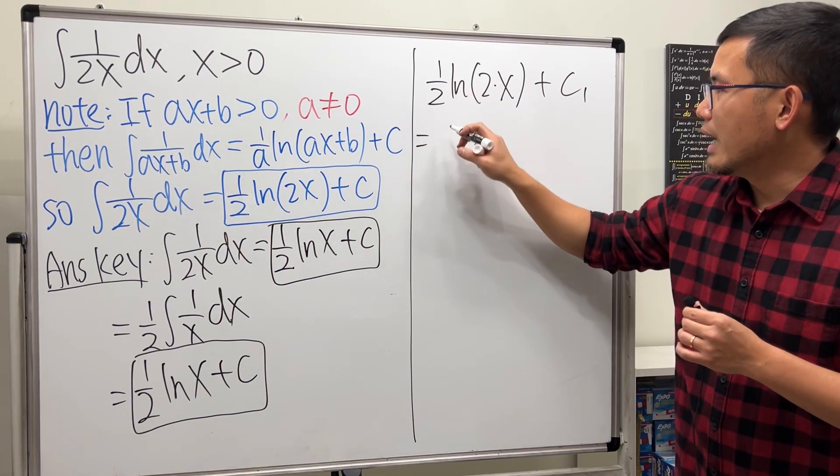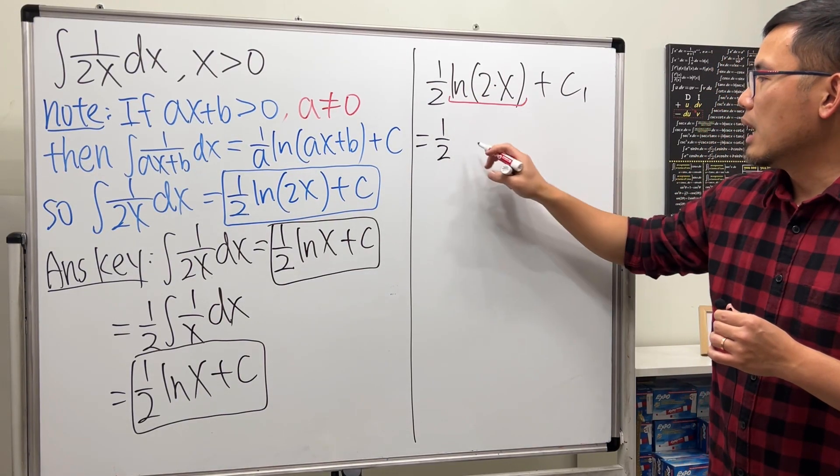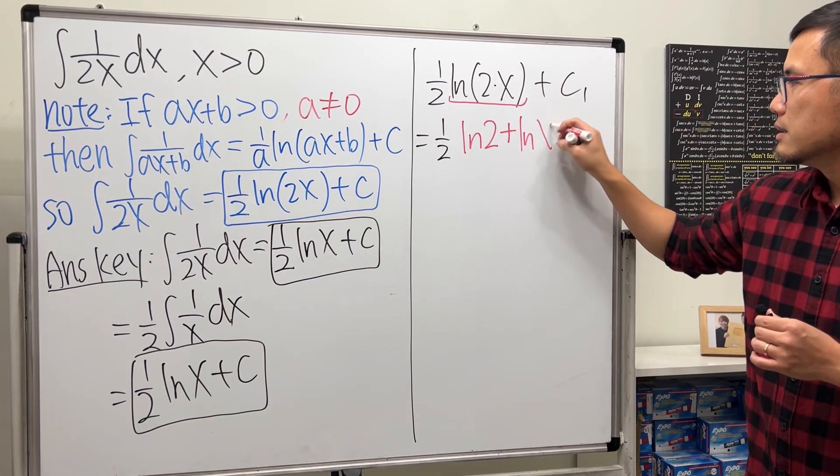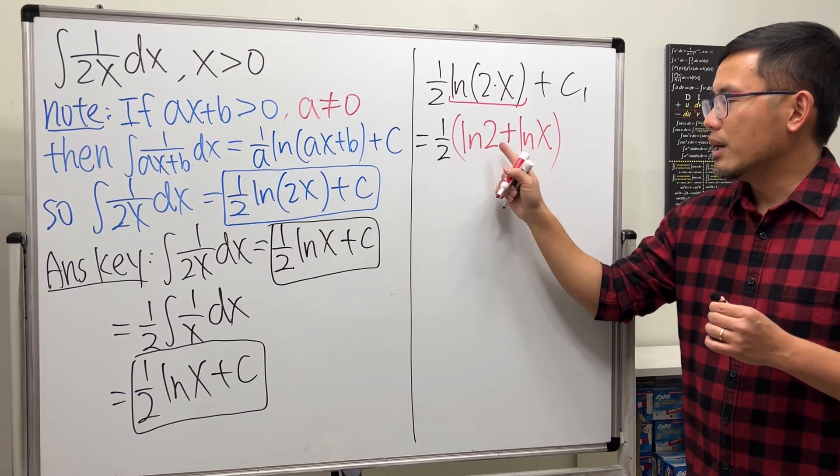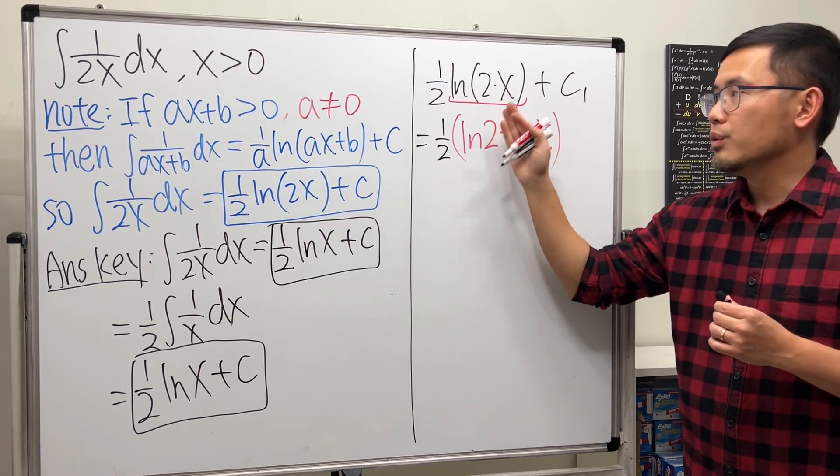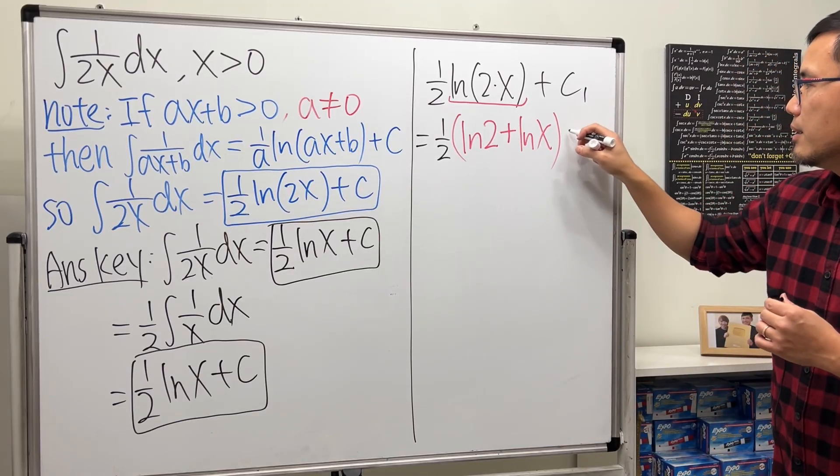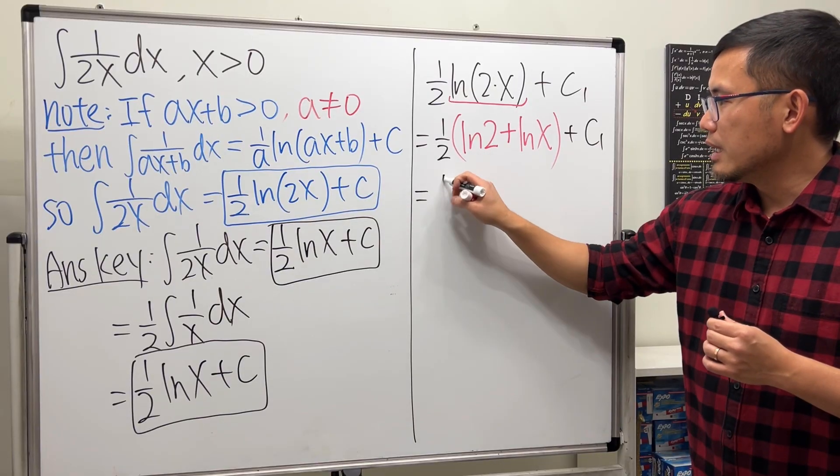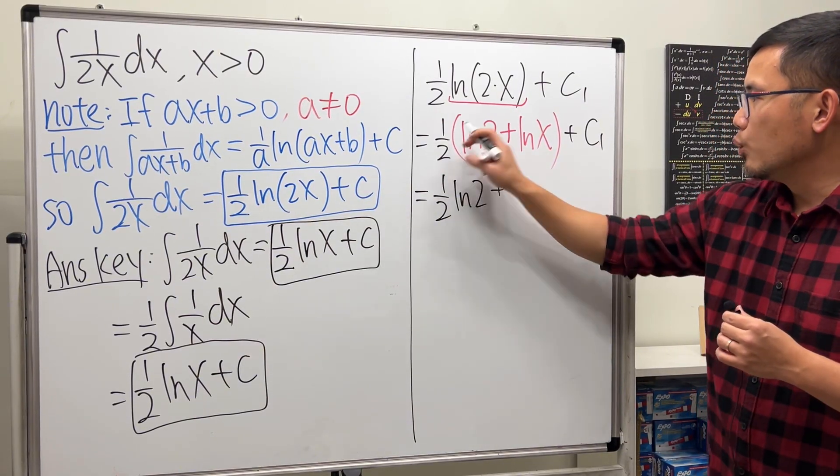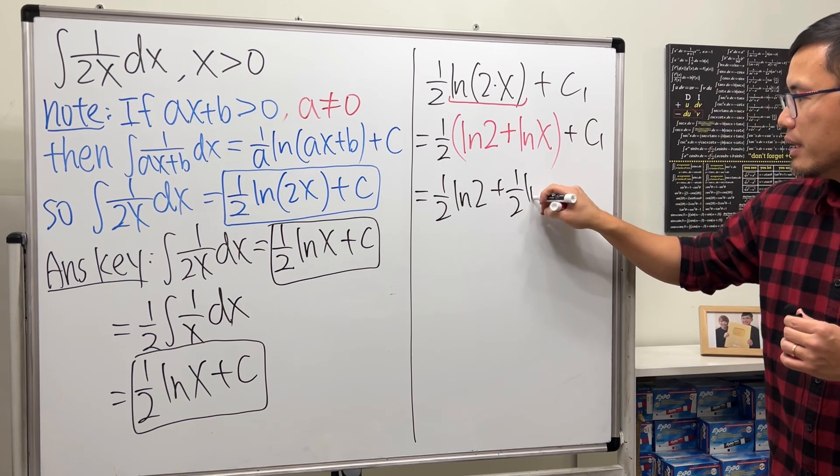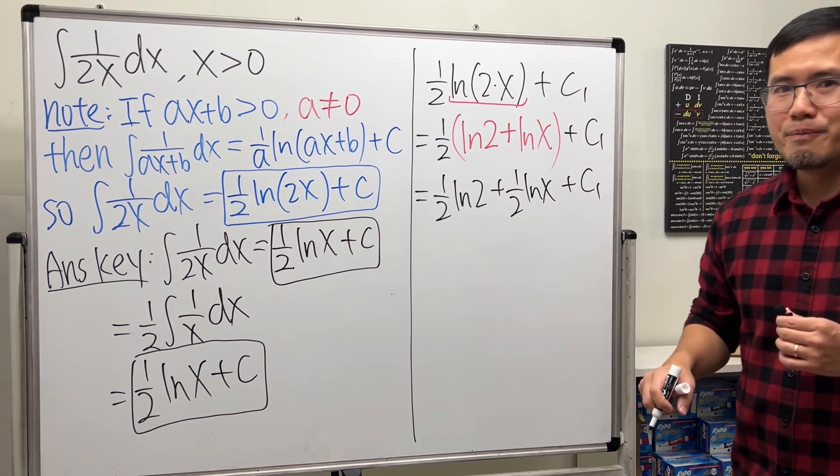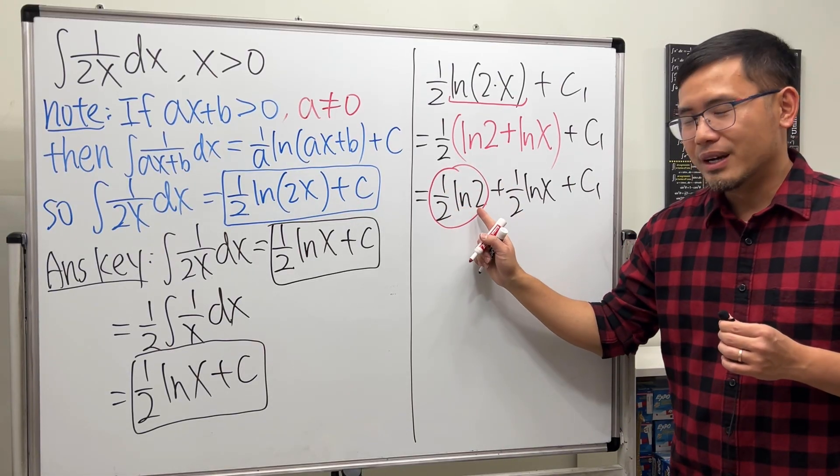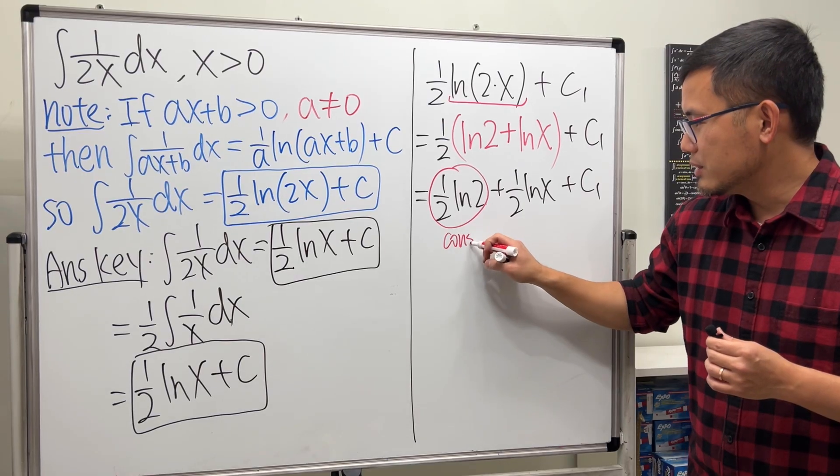So let's maintain the 1/2, and then this right here becomes ln(2) plus ln(x). When you add the ln, you can just multiply it inside, or you can also expand it just like that, and then maintain the plus C1. Distribute the 1/2: we are looking at (1/2)ln(2) plus (1/2)ln(x) and then plus C1. Now this thing, (1/2)ln(2), is just a constant, so I'll just write that down - this is just a constant.